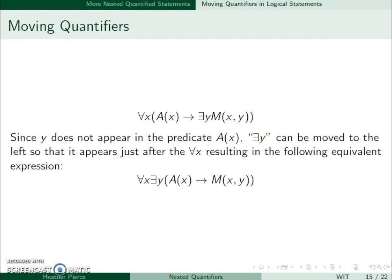And since y does not appear in the predicate for A(x), we can move this ∃y to the left so that it appears just after the ∀. So you can move these as long as you don't move them past something that contains that letter. We were able to move the ∃y to the left since there was nothing to the left that already contained a y.